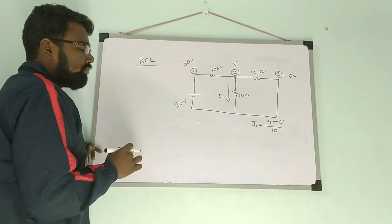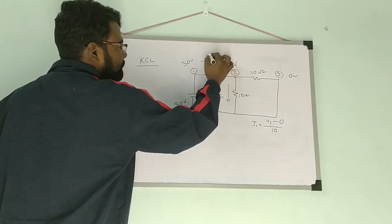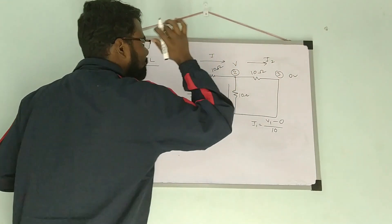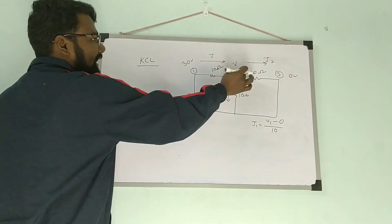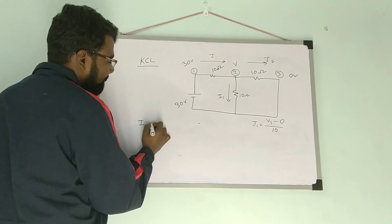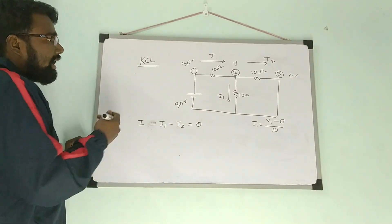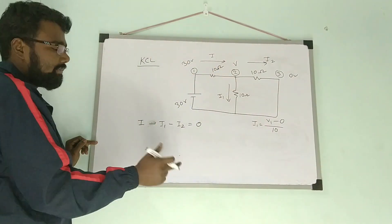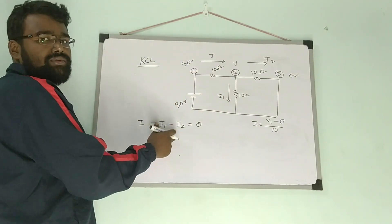Applying KCL at node 2, we can see that this node voltage is V. I take incoming to this node as positive and outgoing as negative. So I is incoming, and I1 and I2 are outgoing. Therefore, I minus I1 minus I2 is equal to zero.